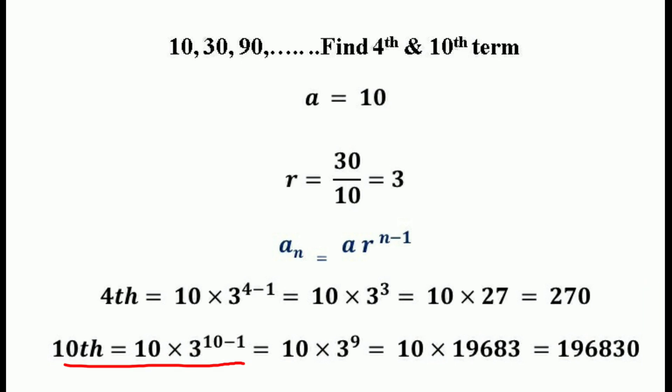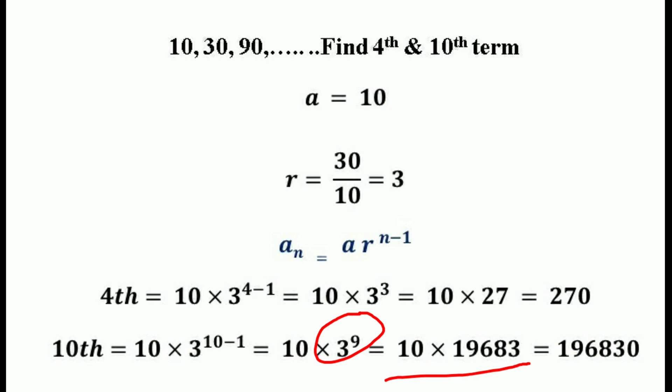Similarly, we want to find the tenth term. The tenth term equals AR^(n-1), which is 10 times 3^(10-1), which equals 10 times 3⁹. Since 3⁹ equals 19,683, we get 10 times 19,683, which equals 1,96,830. So the tenth term is equal to 1,96,830.